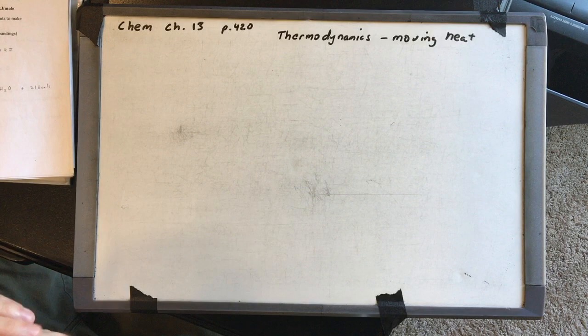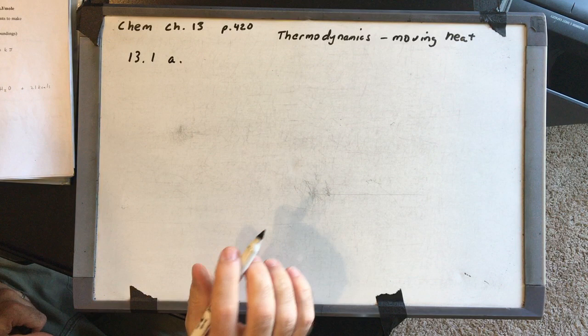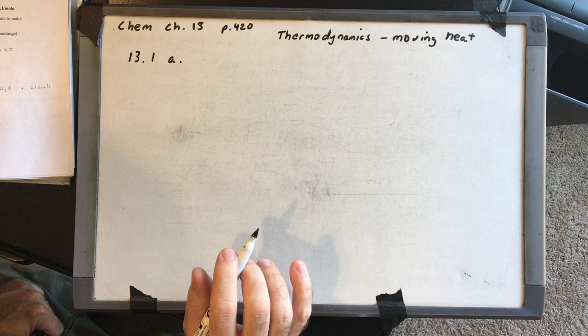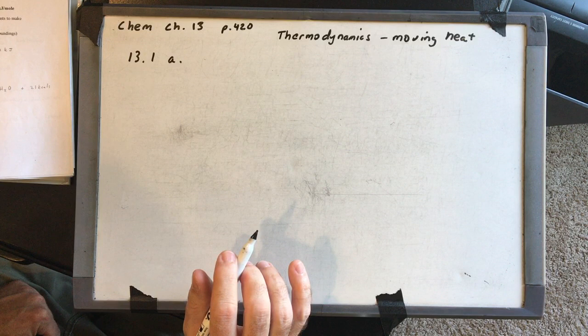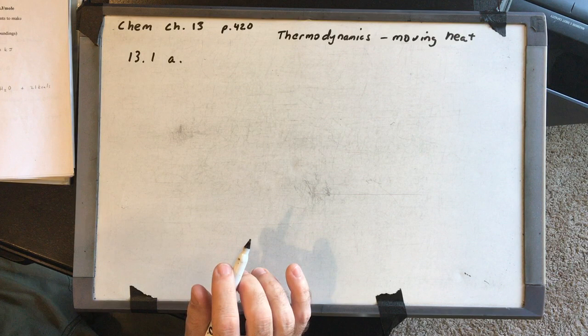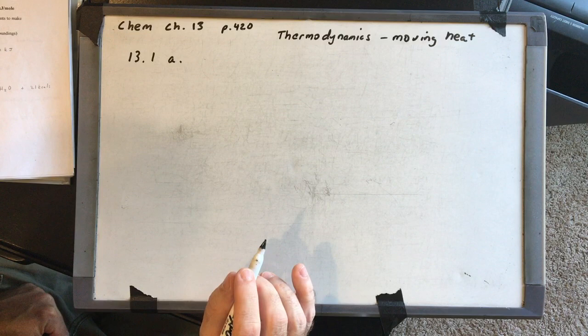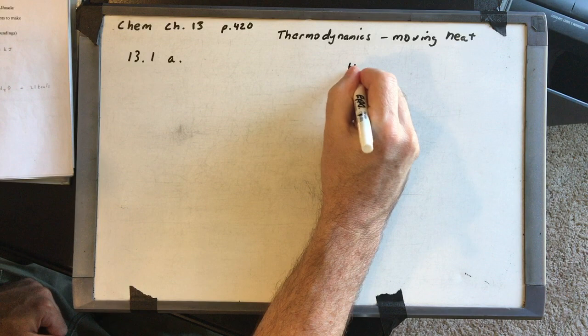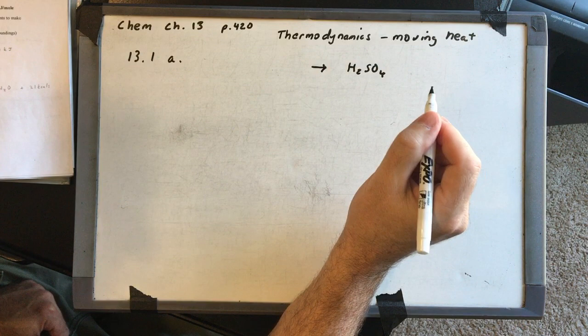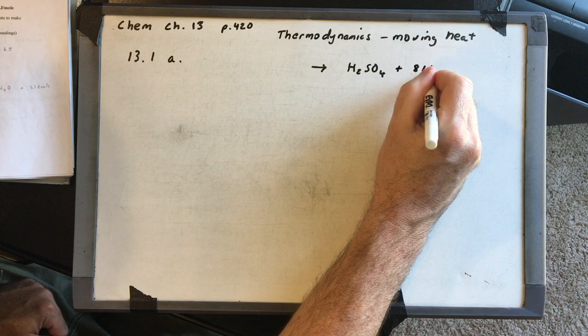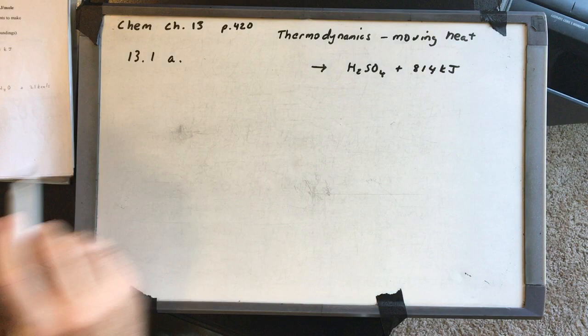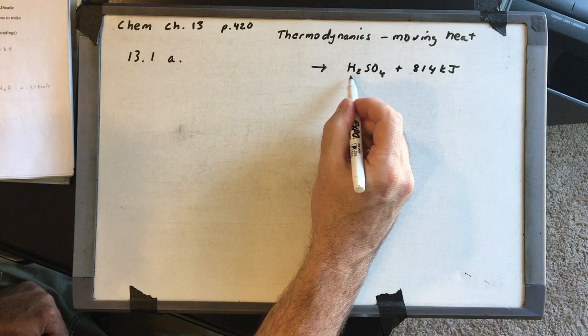Let's look at on-your-own 13.1. Part A says: write the balanced chemical equation for the following processes, being sure to include energy as either a reactant or a product. For the formation of H2SO4, delta H is negative 814 kilojoules. If delta H is negative, that means it's exothermic and energy is shown as a product on the right side of the arrow. You don't write the negative sign — the position on the right side tells you that.